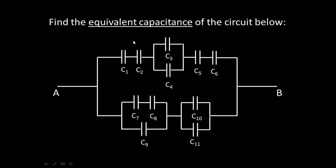Hi guys. Let's go ahead and find the equivalent capacitance of the circuit below. As you can see, the circuit has 11 capacitors in total. There are six capacitors in the top branch, and then five capacitors in the bottom branch.